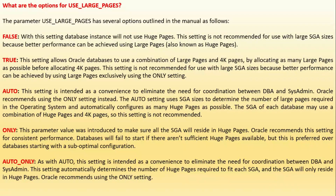ONLY: this parameter value ensures that all the SGA will reside in huge pages. Oracle recommends this setting for consistent performance. Databases will fail to start if there are insufficient huge pages available, but this is preferred over databases starting with a sub-optimal configuration. AUTO setting uses SGA sizes to determine the number of large pages required, and in an average system automatically configures as many huge pages as possible; each database may use a combination of huge pages and 4K pages. Oracle recommends using the ONLY setting instead of the AUTO setting.